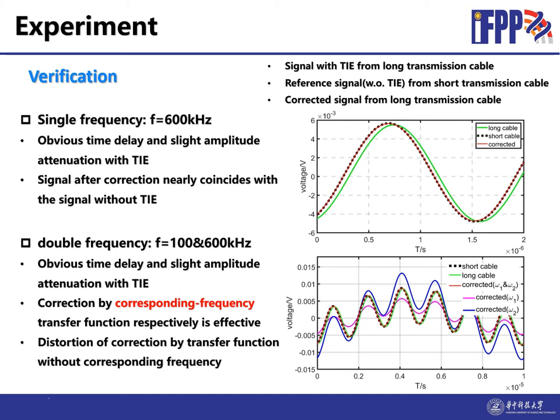In practice, the signals always contain continuous frequency components. So we simulate this situation by a double frequency component signal with 100 and 600 kHz. Here is the result. There is also an obvious time delay and slight attenuation between the black dot and the green line. And after correction by the corresponding frequency transfer function, the green line is corrected to the red one, which is coincided with that from the short cable.